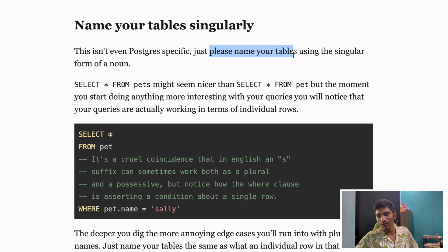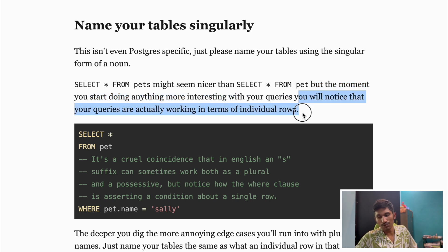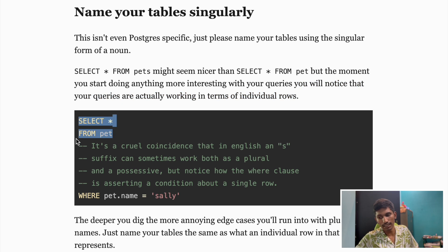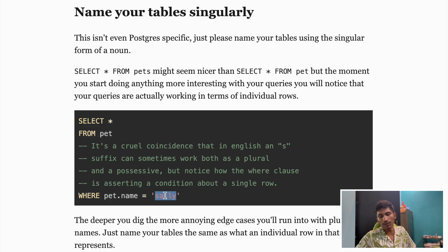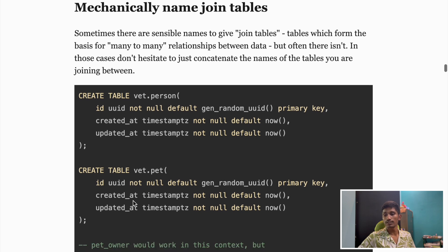The next point is naming your tables singularly. Please name your tables using the singular form — for example, name it 'pet' instead of 'pets'. While 'SELECT * FROM pets' might seem nicer, once you start doing more interesting queries you'll notice your queries actually operate on individual rows. For example, once you add a WHERE condition you're talking about a single row. It's not mandatory, but it's a good standard practice to adopt in your organization.